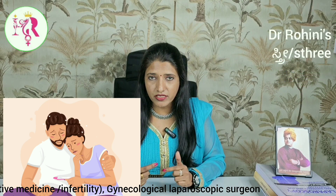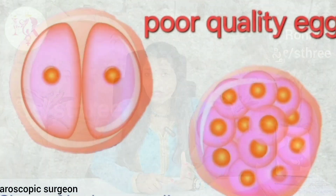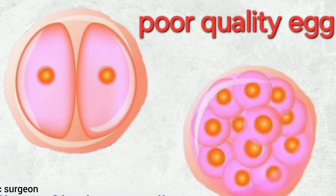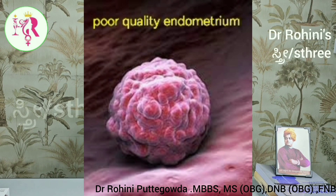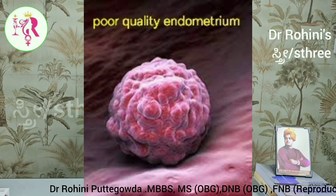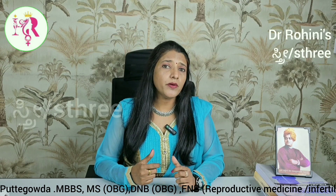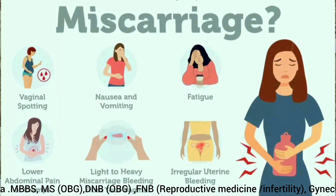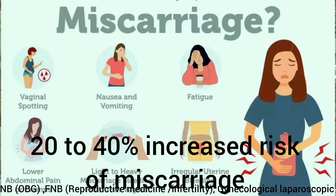That is because the egg is not getting released every month. But once conceived, they can have more complications with the pregnancy, because one thing is the quality of the egg is poor in patients with PCOD, and also the endometrial receptivity and the quality of the endometrium in patients with PCOD is actually very poor. So, once they conceive, when compared to patients who don't have PCOD, there is high risk of having first trimester miscarriage.